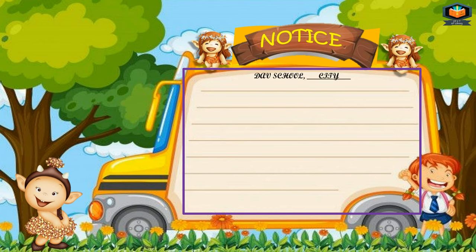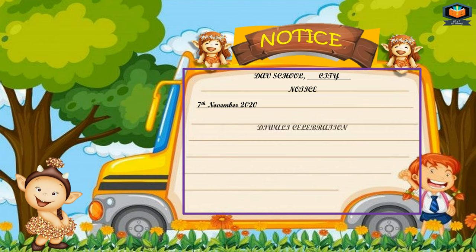First, in the first line, school name along with city. Then the word NOTICE in capitals — school name and NOTICE word both should be in capital letters. Then in the next line on the left side, the date. Then in the next line in the center: Diwali Celebration. This is the heading or title.